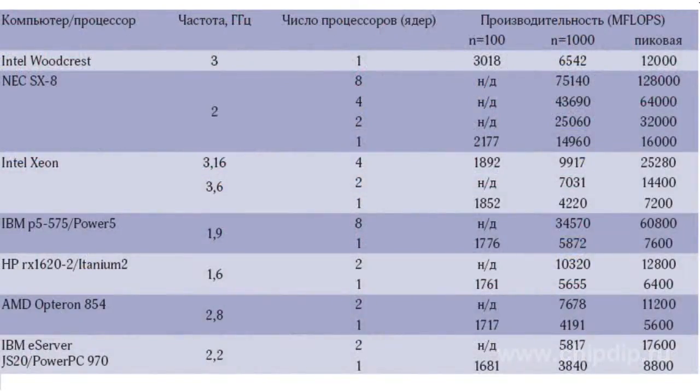Moreover, different results may be obtained in every new test even when the same algorithm is used. In addition, in order to calculate the maximum number of FLOPs for a processor, it should be taken into account that modern processors have several execution units of every type, floating-point operations included, in each of their cores. They work in parallel, and processors can perform more than one operation per clock cycle. Using the same program to test various computers and averaging the values, one can still achieve some FLOPs certainty and use this characteristic to compare devices.